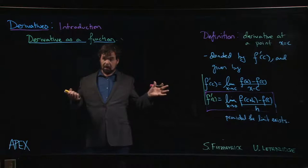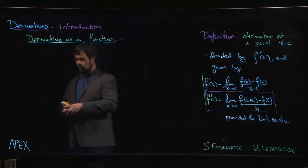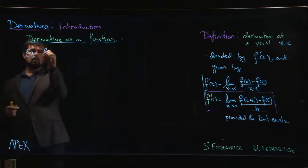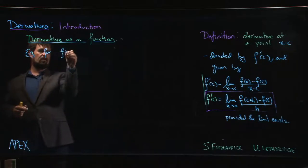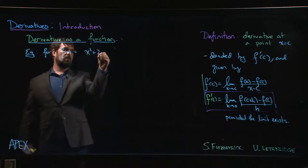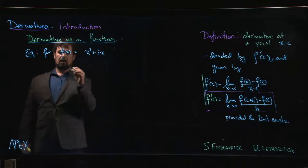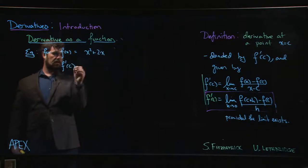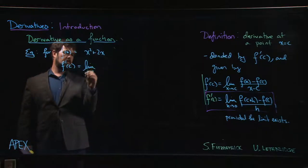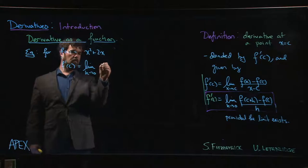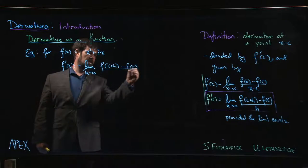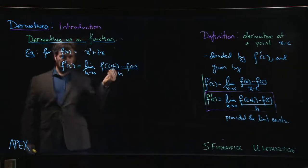The key here is to realize that in a lot of examples, it doesn't matter what c is. So if f of x is something like, let's say, x squared plus 2x, we can write down that f prime of c is going to be the limit as h going to 0, f of c plus h minus f of c over h. And we'll just leave this as c.